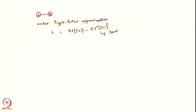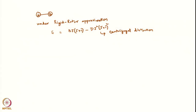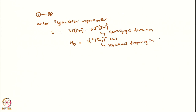We talked about centrifugal distortion because when a rotating body spins, the bond length increases due to centrifugal force. For most molecules, D/B is equal to 4B divided by the vibrational frequency squared, and it is much less than 1. Here, the vibrational frequency is in centimeter inverse.